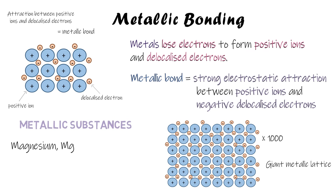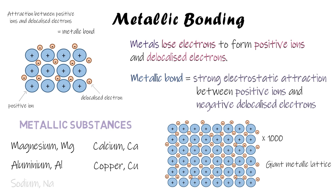Examples of metallic substances include magnesium, calcium, aluminium, copper, sodium, and iron — things that are on the left of the periodic table.